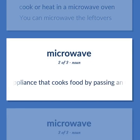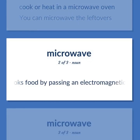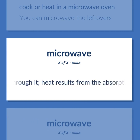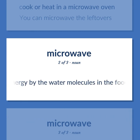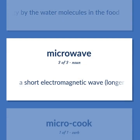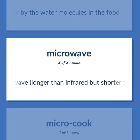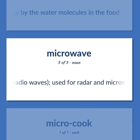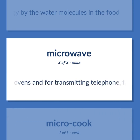Kitchen appliance that cooks food by passing an electromagnetic wave through it. Heat results from the absorption of energy by the water molecules in the food. A short electromagnetic wave, longer than infrared but shorter than radio waves, used for radar and microwave ovens and for transmitting telephone, facsimile, video and data.